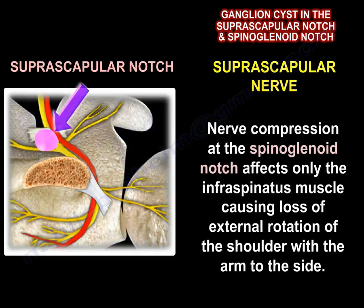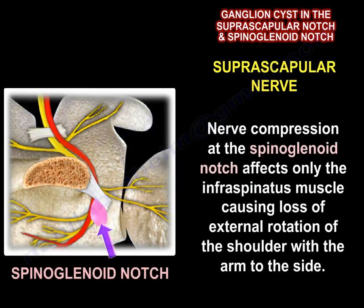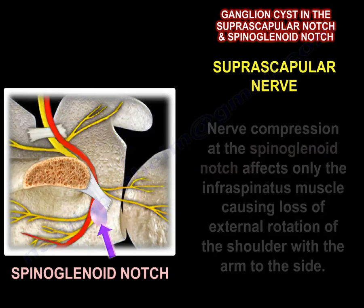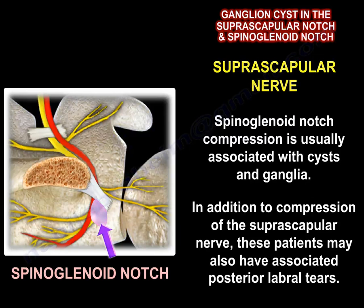Nerve compression at the spinoglenoid notch affects only the infraspinatus muscle, causing loss of external rotation of the shoulder with the arm at the side. Spinoglenoid notch compression is usually associated with cysts and ganglia. In addition to compression of the suprascapular nerve, these patients may also have associated posterior labral tears.